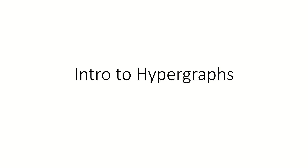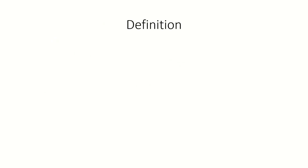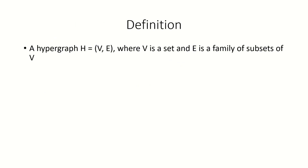Today we're going to look at hypergraphs, which are a generalization of graphs. Intuitively, a hypergraph is what we get when we allow our edges to join more than two vertices at a time. More formally, we can define a hypergraph to be a pair of a vertex set V and a family of subsets of V, which we call E, where the members of E are our edges.